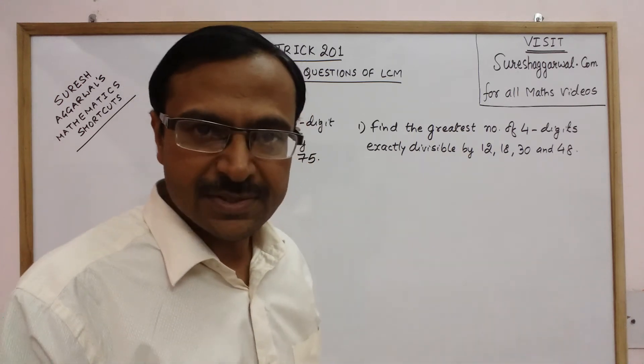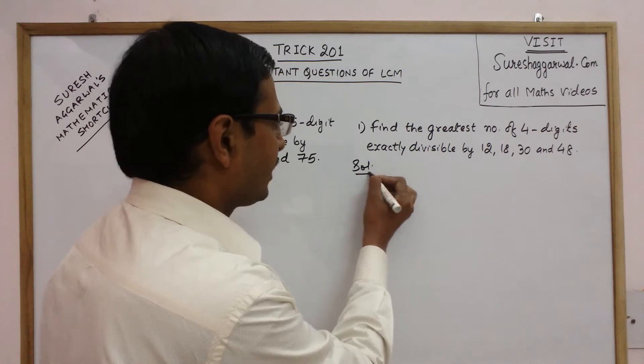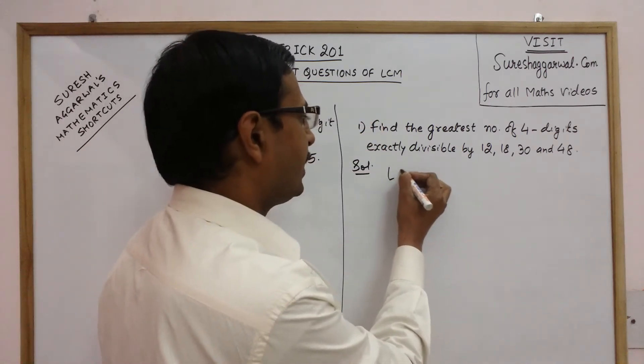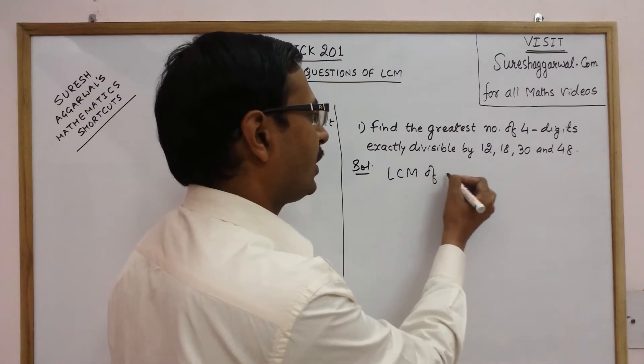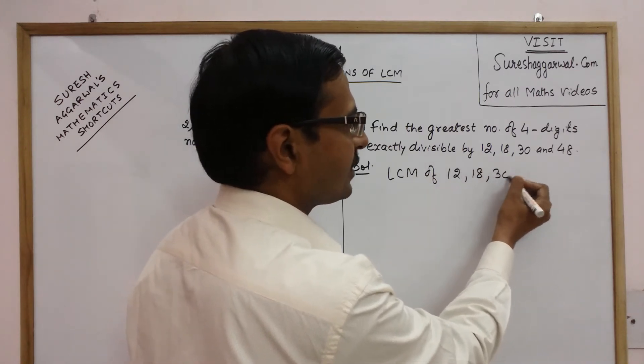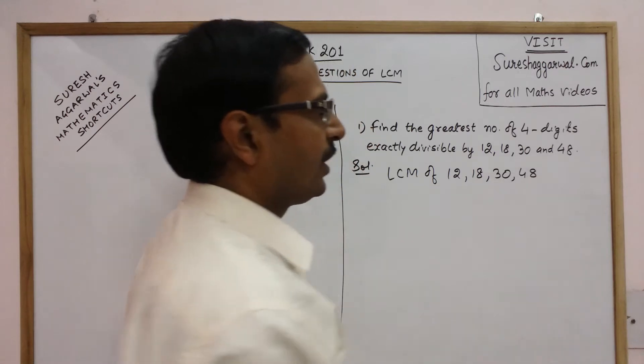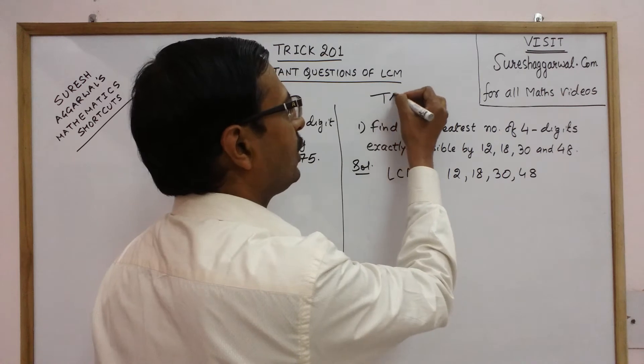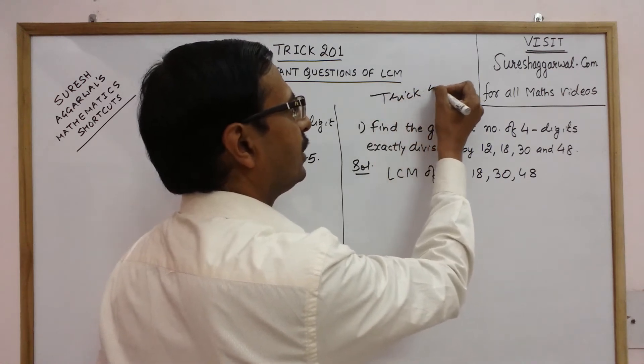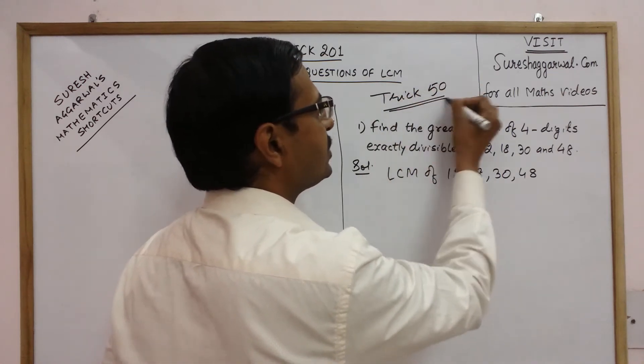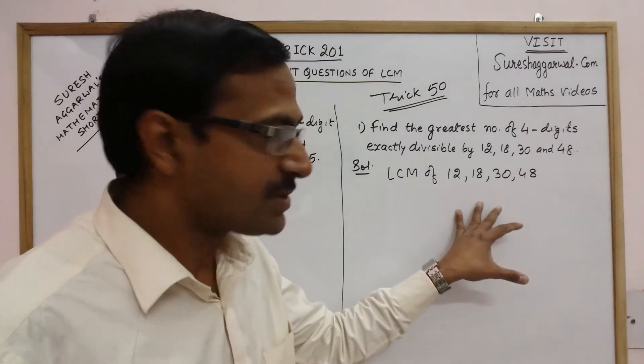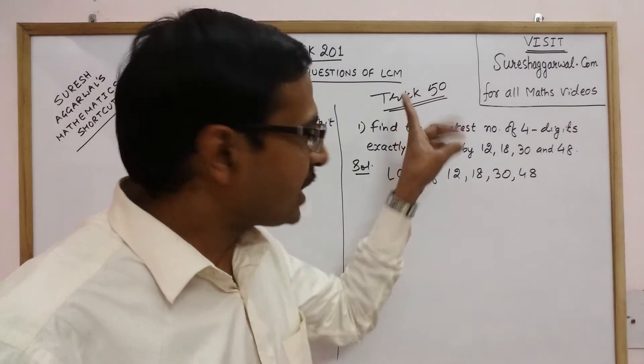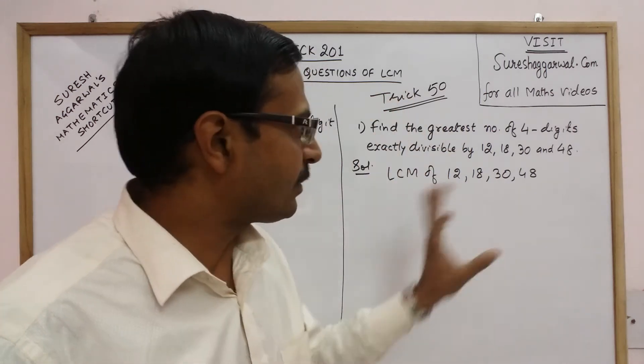The first thing we have to do is to first find the LCM of these given numbers. Now in trick number 50 I told you a trick through which we can find the LCM of some numbers just by inspection. Now we are going to use that trick 50 to find the LCM of these four numbers.